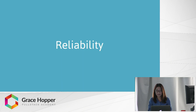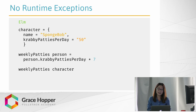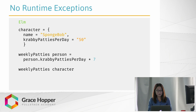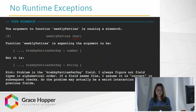Elm is also very reliable, meaning that unlike in handwritten JavaScript, Elm code does not produce runtime exceptions in practice. Runtime exceptions are errors that occur after compilation during code execution. In this example, we have the Elm record character and we're defining a function that we hope will return the number of patties that SpongeBob makes in a week. But when we attempt to compile it, we get an error — the Elm compiler doesn't even let us run this code, because it sees that we're trying to perform a mathematical operation with a string. This is all possible because the Elm compiler uses type inference, making it hard for these bugs to ever make it to production code.